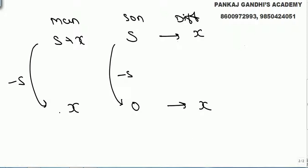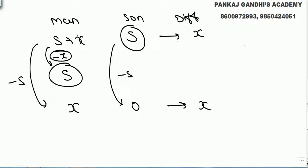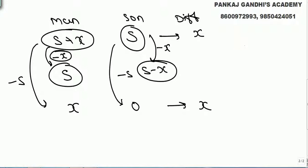When father was s years old — which is son's present age — how many years back was that? It was x years back. Today father's age is s plus x, so when father's age was s, that was x years back. At that point, son's age was s minus x.